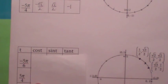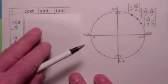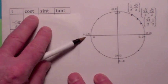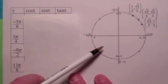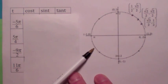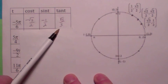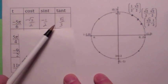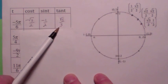You really don't have to memorize that much — you have to know those special points and be able to convert them into different quadrants. For t = -5π/6, going clockwise puts you right there. It's the same reference point, but x and y are both negative, so the tangent is positive: 1 over √3, which is the same as √3/3.